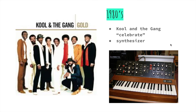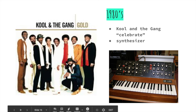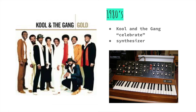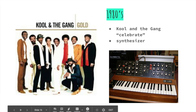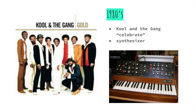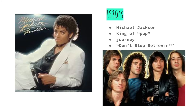Then in the 80s, we had groups like Kool and the Gang, who had a famous song called Celebrate. We also had the development of the synthesizer — it looks like a keyboard, but you can turn all these little buttons and knobs to make any sound you want. It revolutionized music during the 80s. And speaking of the 80s, there's Michael Jackson — basically known as the king of pop music. And groups like Journey, who sang Don't Stop Believin'.